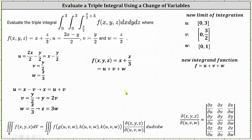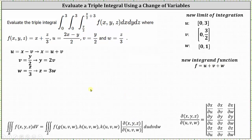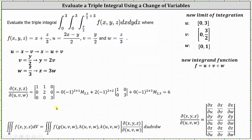Now for the last step, we need to find the Jacobian. The Jacobian is equal to the determinant of a three by three matrix with the partial derivative entries shown. In row one, the partial of x with respect to u: since x equals u plus v, differentiating with respect to u gives one. The partial of x with respect to v, differentiating u plus v with respect to v, is also one. The partial of x with respect to w: there is no w, so the partial derivative is zero.